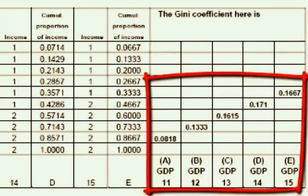This is called the Kuznets inverted U curve. It says the Gini coefficient will increase as GDP increases, then plateau at a high, and then, as income keeps increasing, the Gini coefficient will decline — producing an inverted U shape.